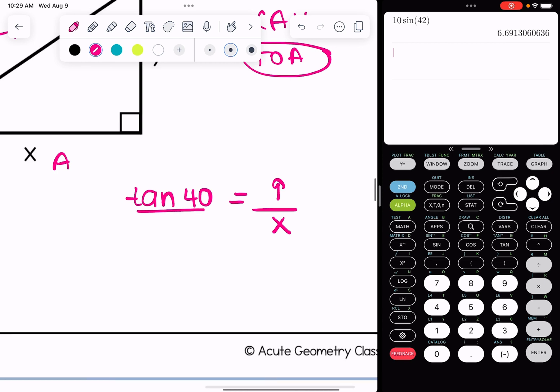Let's put tangent of 40 over one, and we're going to cross multiply. You'll notice this time, this does not have the x isolated, so we are going to have to do this extra step of dividing both sides by tangent 40.